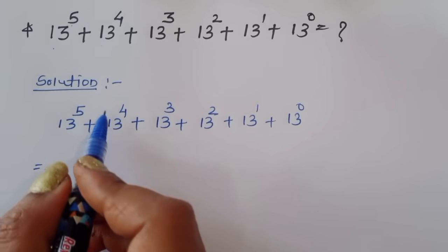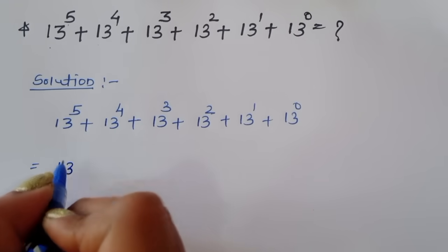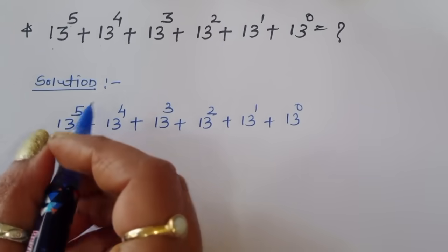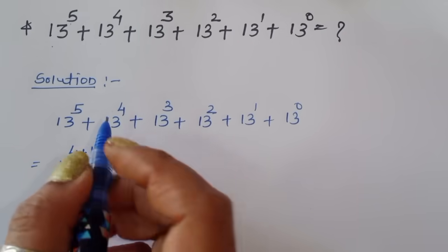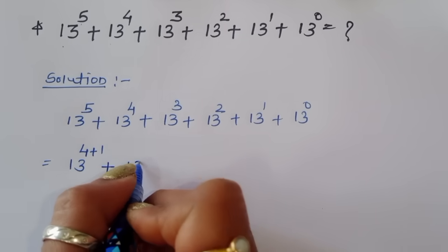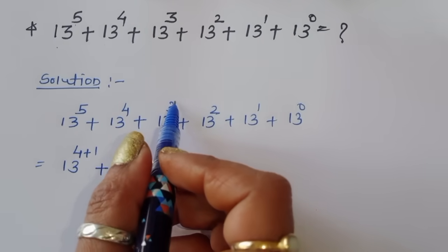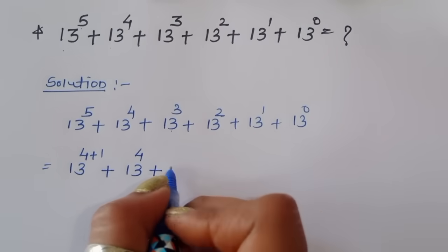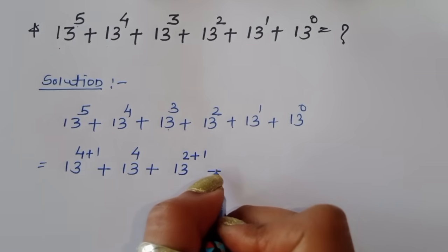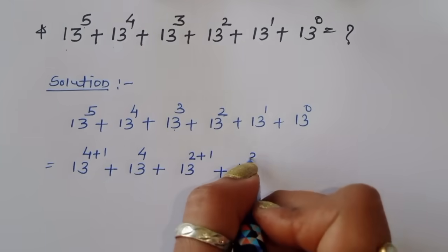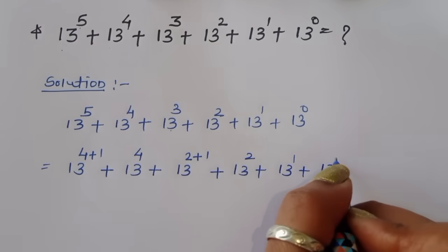Now we can make some changes in the powers. So 13 power 5 — this power 5 we can write as 4 plus 1. So that gives 13 power (4+1) plus 13 power 4 plus 13 power 3. This power 3 we can write as 2 plus 1, so 13 power (2+1) plus 13 power 2 plus 13 power 1 plus 13 power 0.